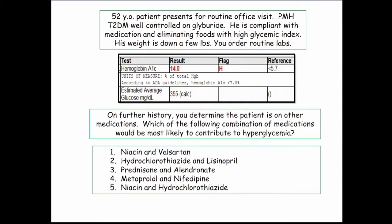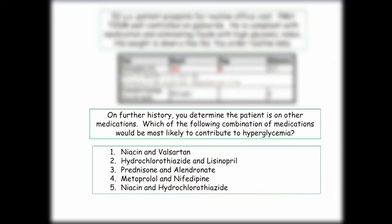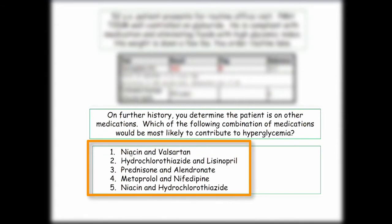Which of the following medications can contribute to hyperglycemia? There are drugs that cause hyperglycemia and you need to be familiar with them. Niacin causes hyperglycemia. Valsartan doesn't affect glucose — ARBs don't affect glucose. Hydrochlorothiazide — thiazide diuretics can cause hyperglycemia; it's a side effect that interferes with insulin release. ACE inhibitors do not. Prednisone can certainly raise your sugar.